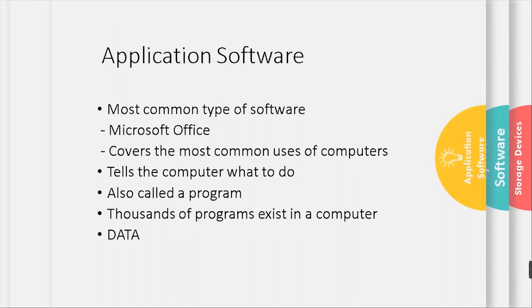Application software is the most common type of software. Microsoft Office covers the most common uses of computers. It tells the computer what to do and is also called a program. Thousands of programs exist in a computer. Data can be organized into files.